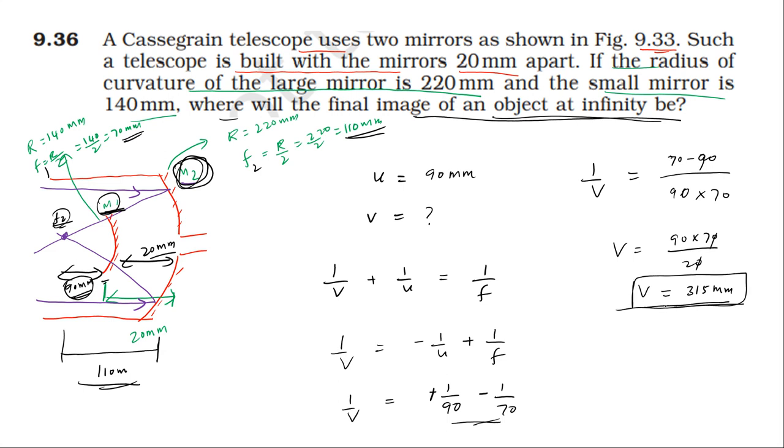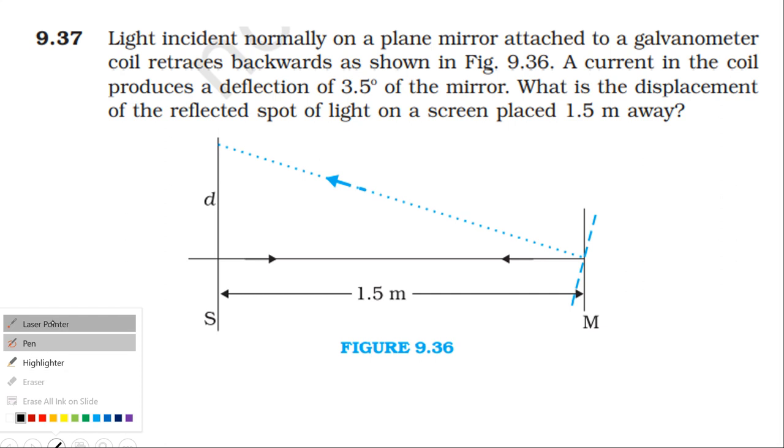That's the answer. Next question 9.37: Light incident normally on a plane mirror attached to a galvanometer coil retracts backwards as shown in the figure. A current in the coil produces a deflection of 3.5 degrees of the mirror. What is the displacement of the reflected spot of light on a screen placed 1.5 meters away?